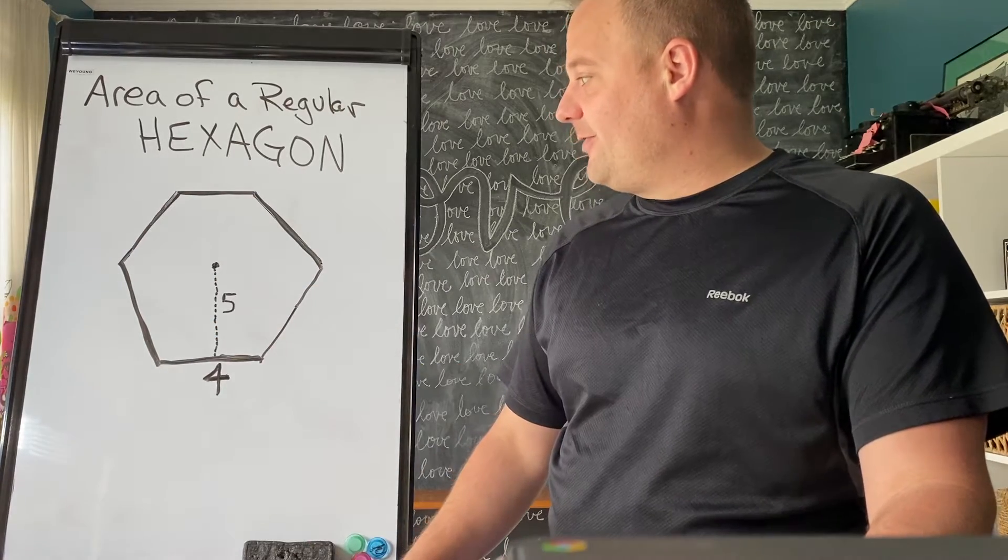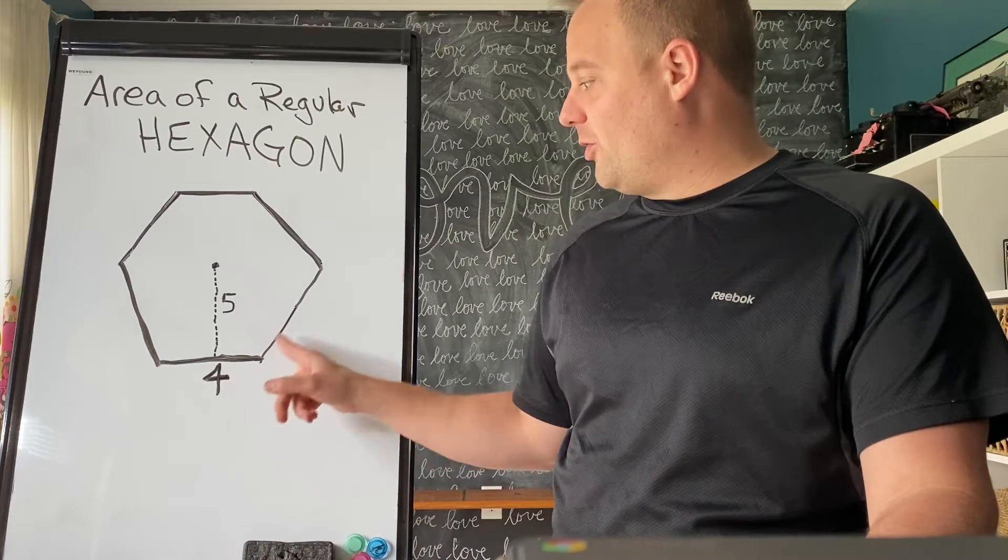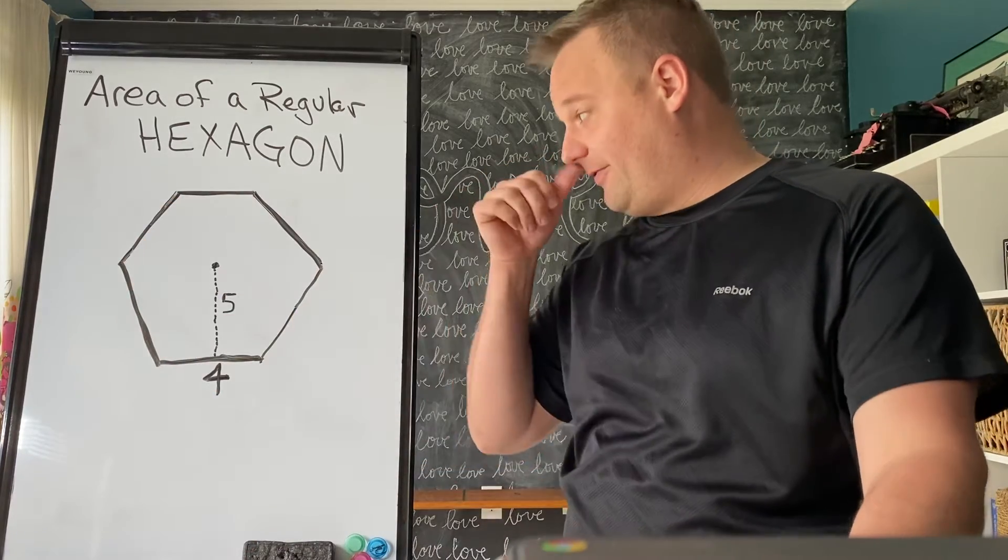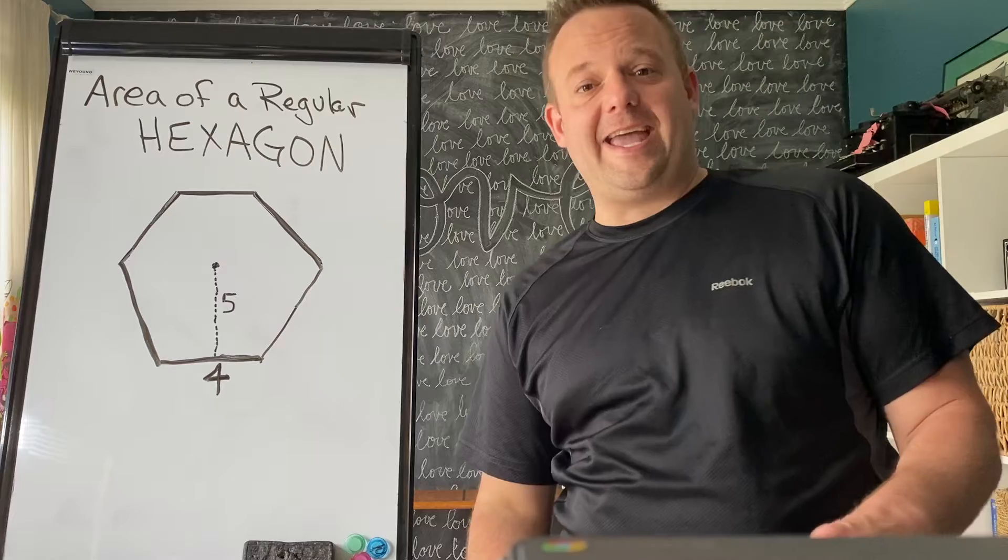For this hexagon, if you were to find the perimeter, you would do 4 times 6 because there are 6 sides. That would find the perimeter. But we want to find the area of this hexagon.